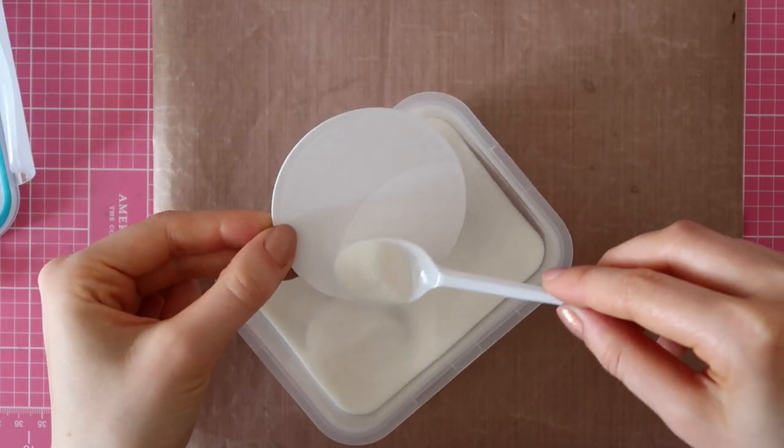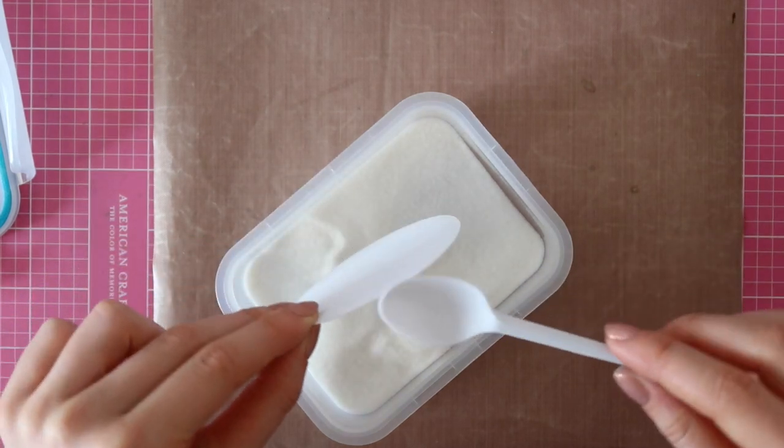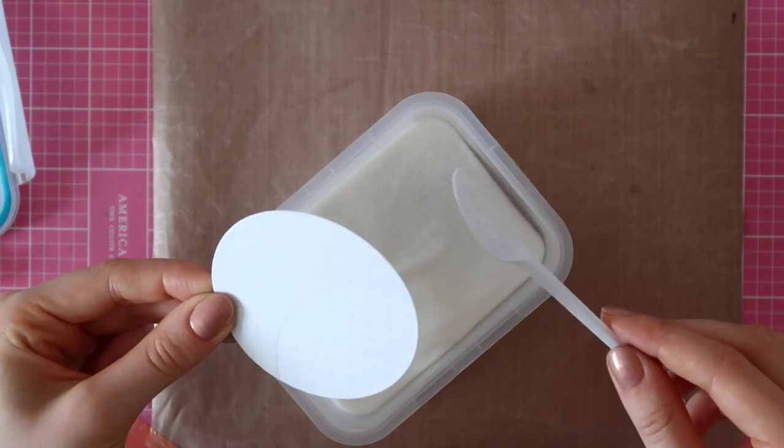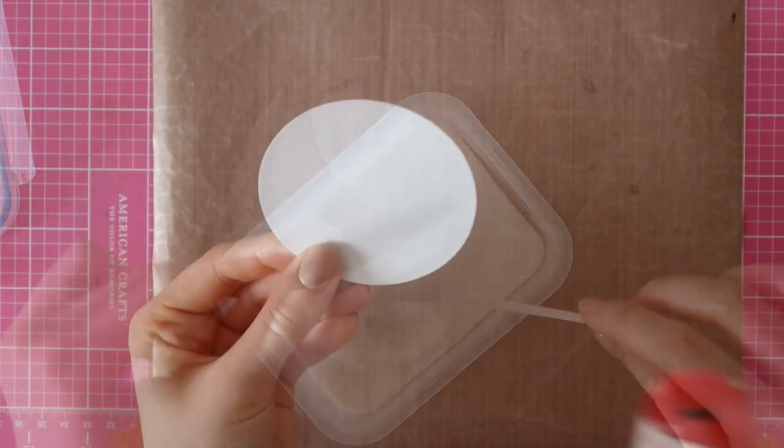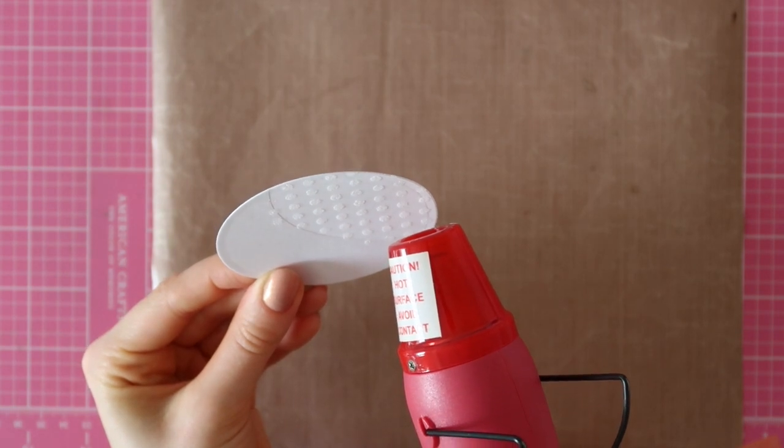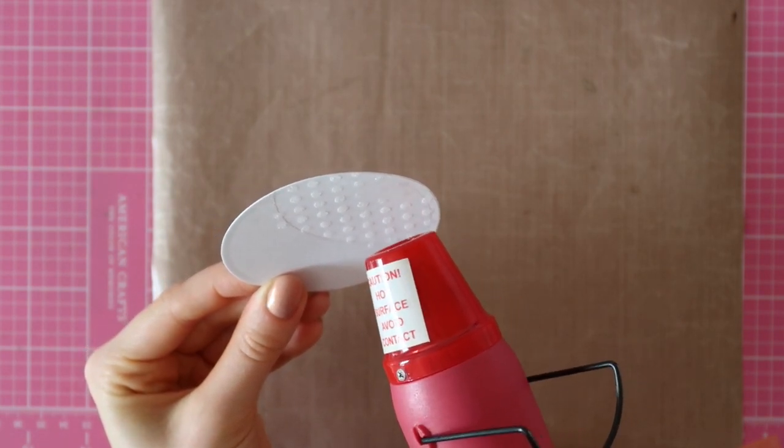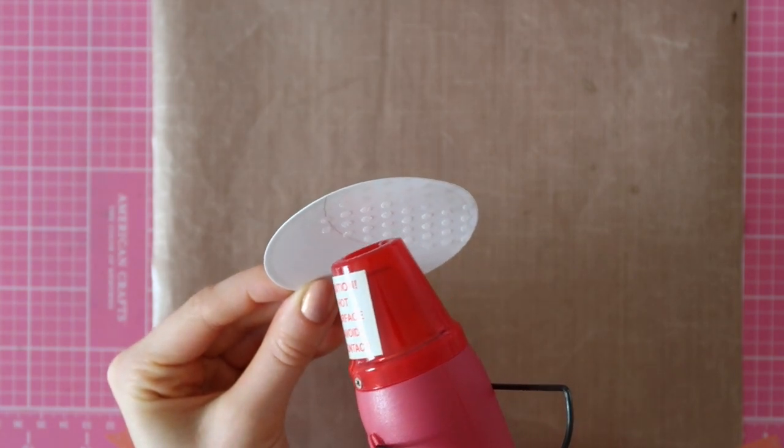I am stamping it with the WOW pad and next I am sprinkling on some clear gloss embossing powder from WOW. Since we're using white cardstock, you could also use white embossing powder since the polka dots will end up looking white since I just used clear embossing powder.